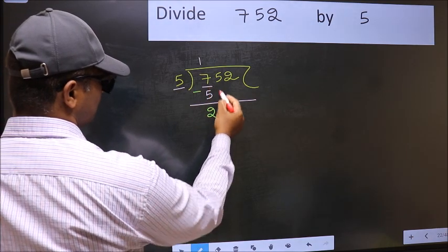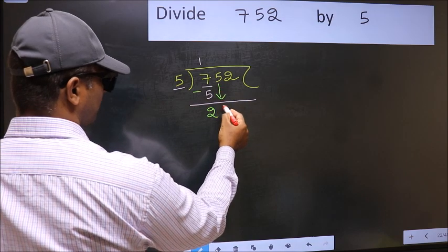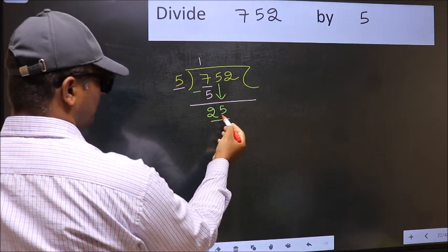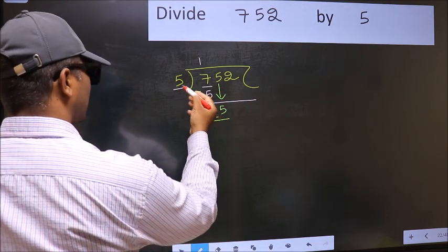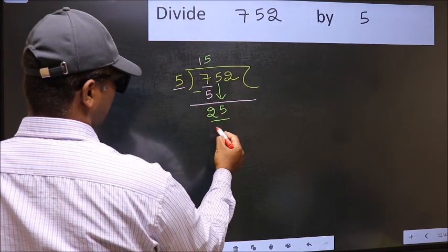After this, bring down the beside number. So 5 down. Now 25. When do we get 25 in 5 table? 5 5s, 25.